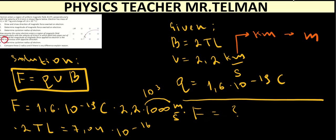And what is the unit of the force? Do you remember? Yes, exactly. It's the newton. So, the F will be equal to 704 multiplied by 10 to the power of minus 16 newtons.